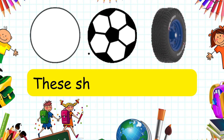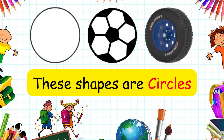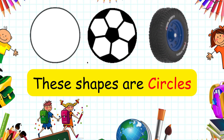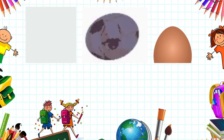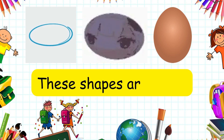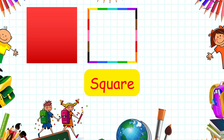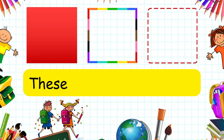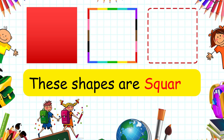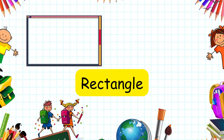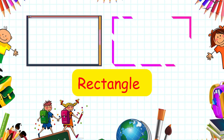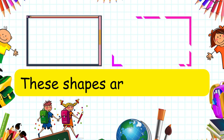Oval — these shapes are ovals. Square — these shapes are squares. Rectangle — these shapes are rectangles.